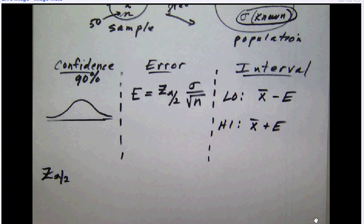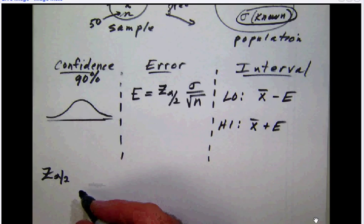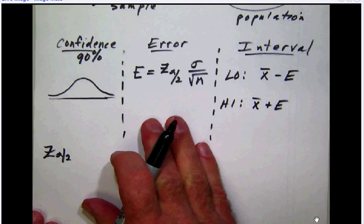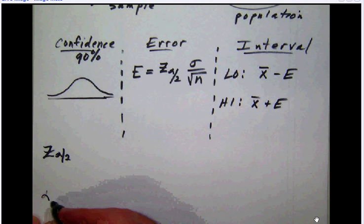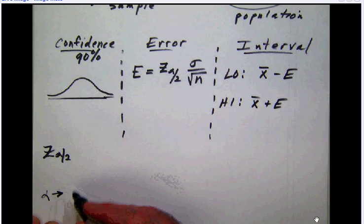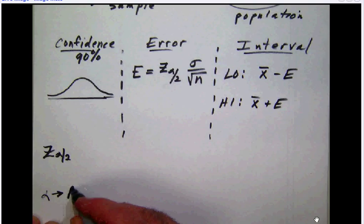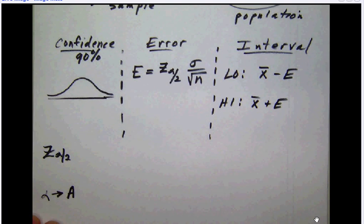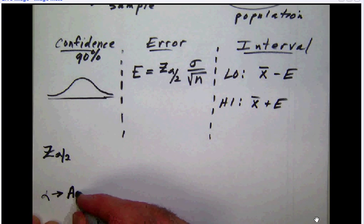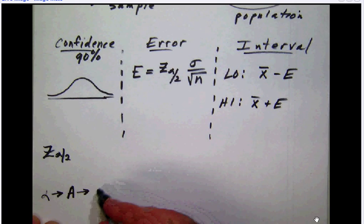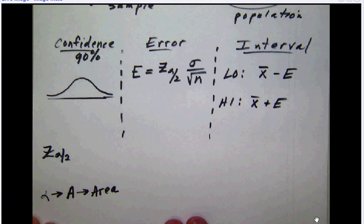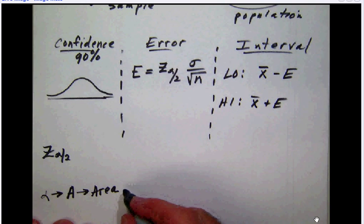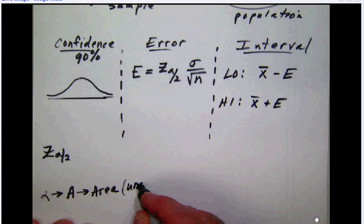Students will often ask, well, what's an alpha? What's that all about? Let's talk about that. Alpha is the first letter of the Greek alphabet, which is very similar to our letter A, the first letter of the English alphabet. A is the first letter of the word area. In this context, area that we're talking about is the area that we are unsure of.